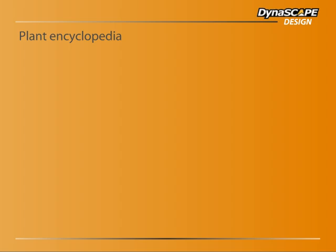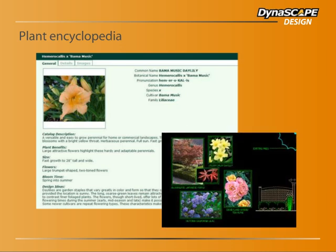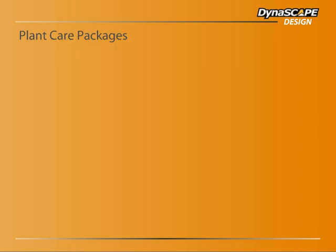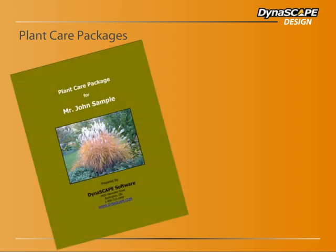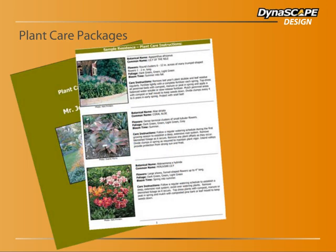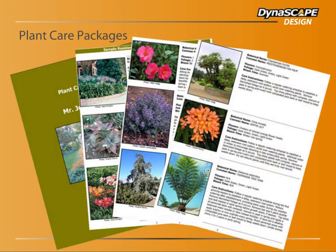In addition to equipping you with all the basic tools you need to create outstanding renderings, Dynascape Design also connects you to an online encyclopedia where you can look up details and photographs from over 5,000 plant species. Not only is this a handy way to browse for design ideas, but once you've selected all the plants, you can also enhance your drawings with color photographs and complete descriptions of each species selected. What's more, you can use material from the plant encyclopedia to prepare impressive plant care packages to hand to your clients — not just general advice, but specific instructions on each of the exact species chosen for their garden.